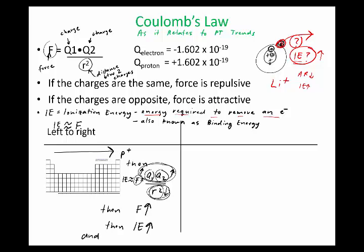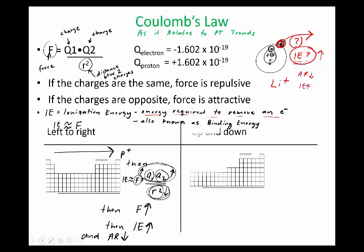Going up and down, I'll explain it in one direction going left to right, but you should be able to explain this using Coulomb's law going the other way. For going up and down, I'm going to have you explain. I'll write out the equation again: IE is approximated by the force of attraction between the two charges, Q1 × Q2 / r².